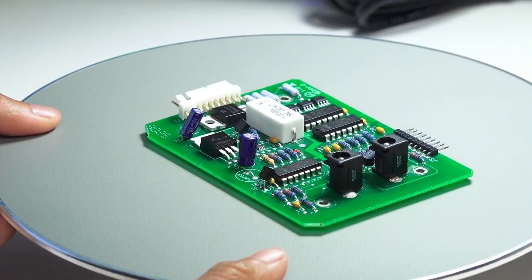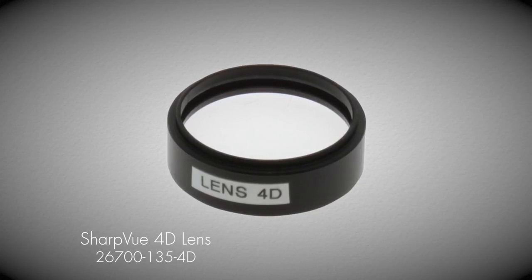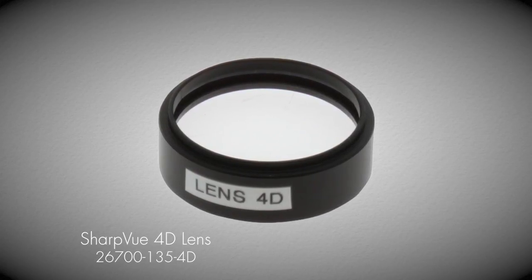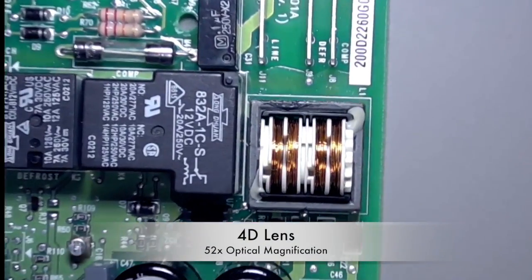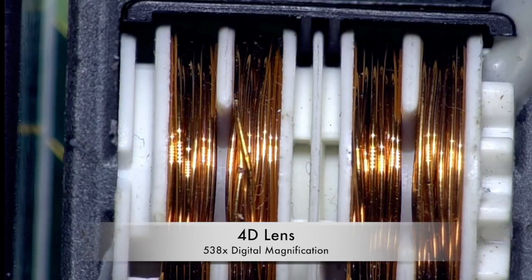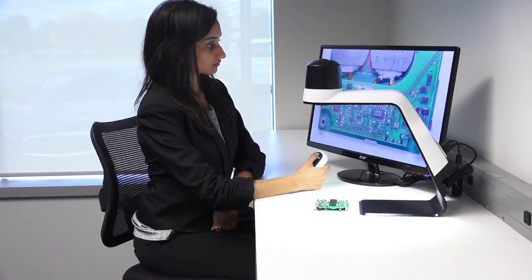For extra magnification, Aven offers the SharpView 4D lens. Simply attach the lens to the SharpView camera for a magnification range of 2x to 52x optical or 2x to 538x digital zoom.